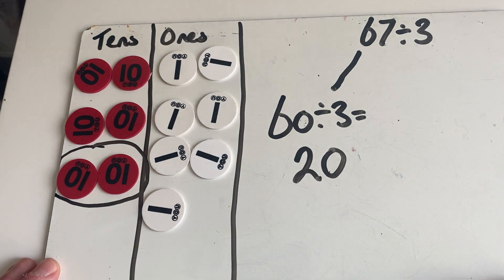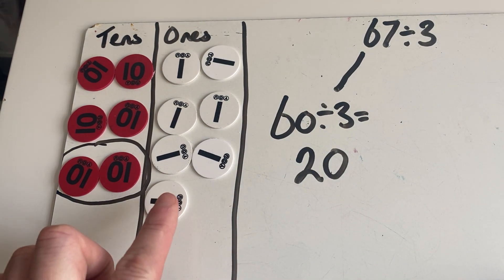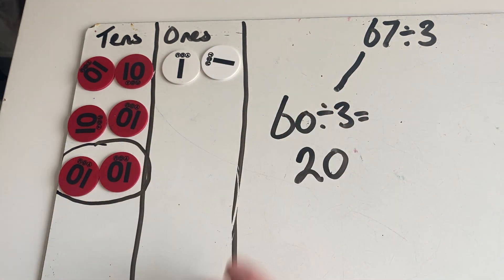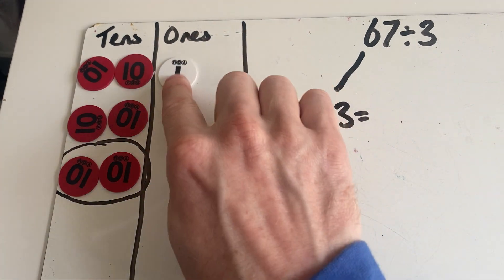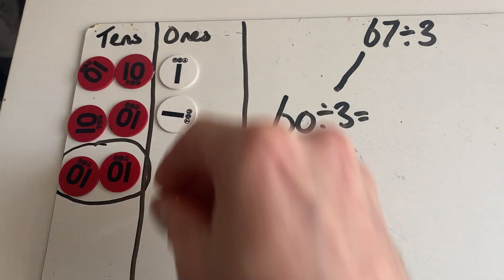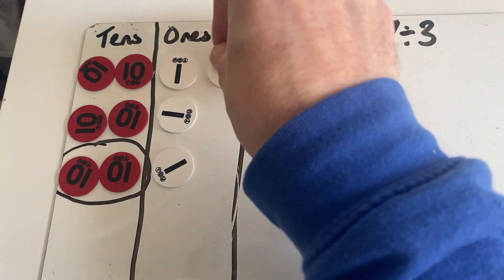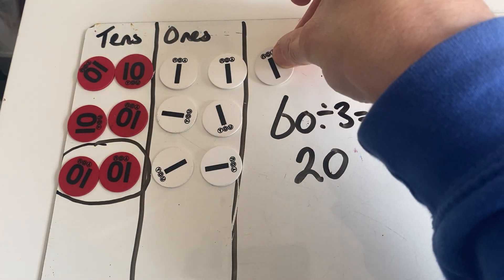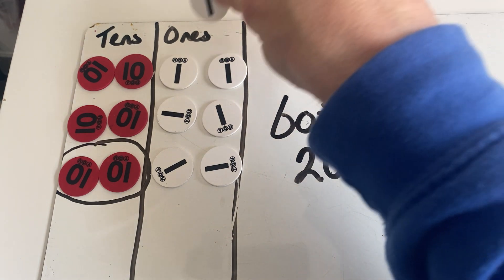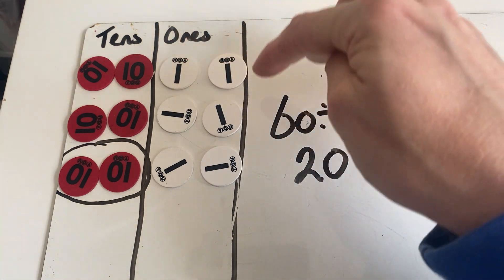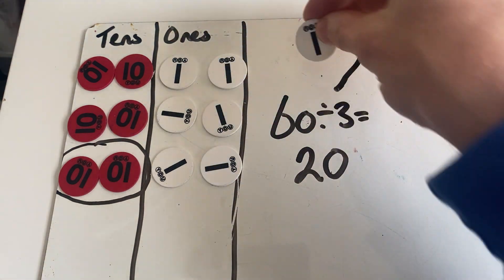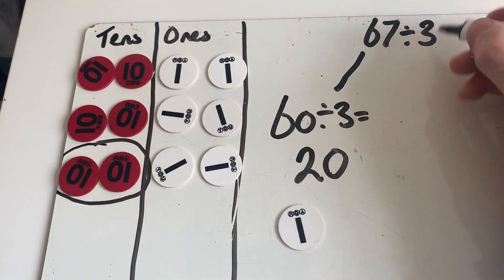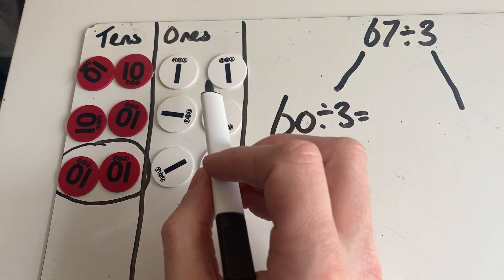Now we're going to group these together. We're going to have three groups - one, two, three - and we just keep adding on. We've got one left, but we cannot add that to this group here because each group has to be the same value. So this one is just going to be left outside for the time being.